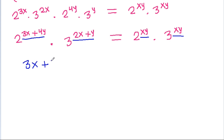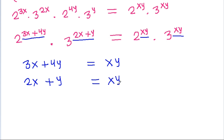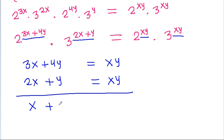Comparing powers of 2: 3x + 4y = xy, and comparing powers of 3: 2x + y = xy. If we subtract both equations, then 3x minus 2x is x, and 4y minus y is 3y, equal to xy minus xy which is 0. So we get x minus 3y equals 0, meaning x equals minus 3y.